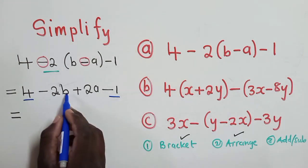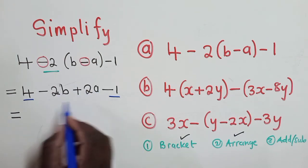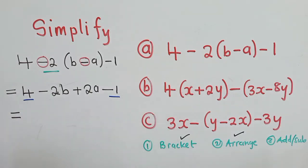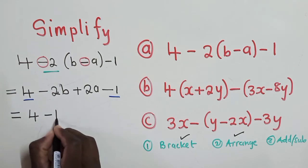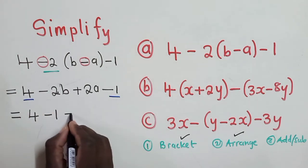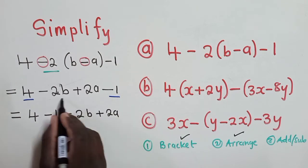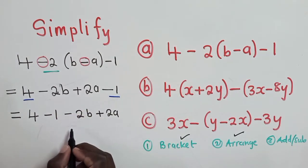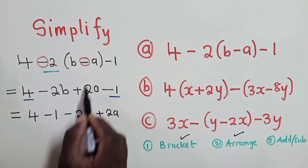Here we've got negative 2b. Is there anything else with a b? No. Here we've got 2a. Is there anything else with a? No. So this and this will remain. We're going to write 4 minus 1. We want to put them together. Minus 2b plus 2a. So these two will maintain because they are just alone. This one is alone and this one is alone.